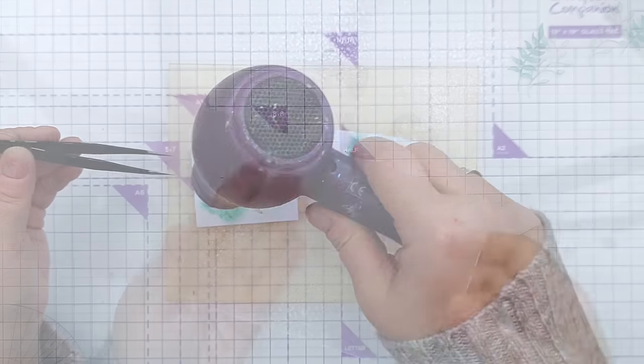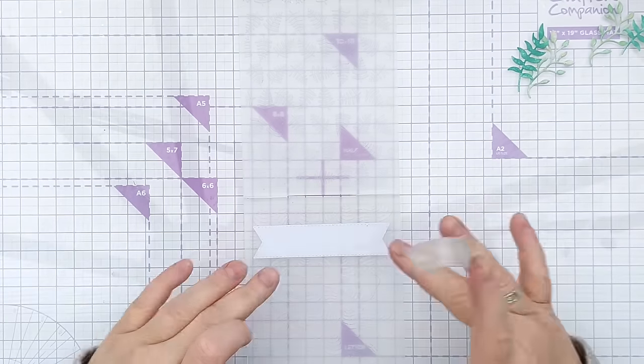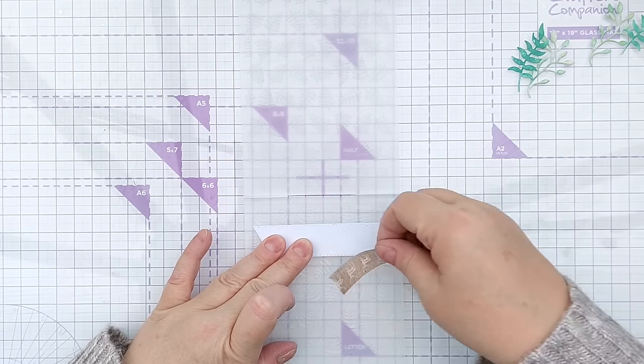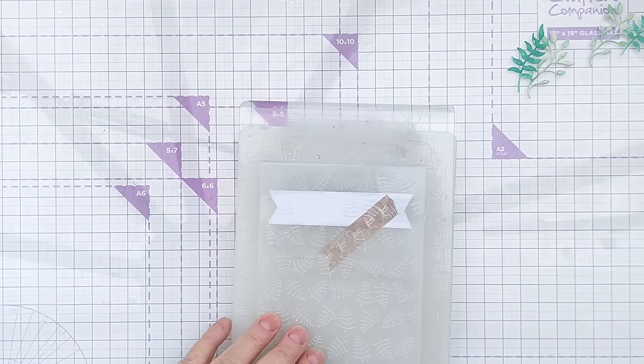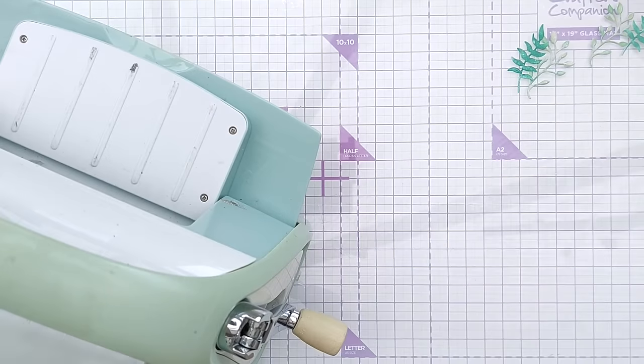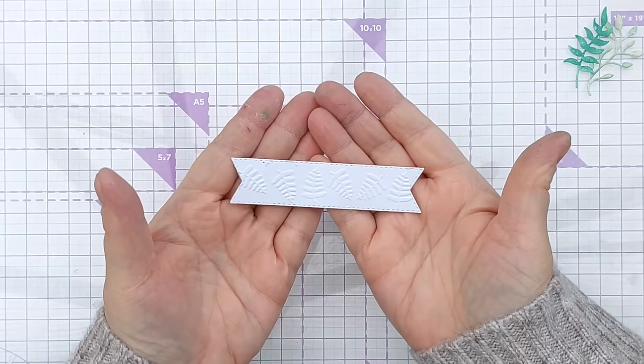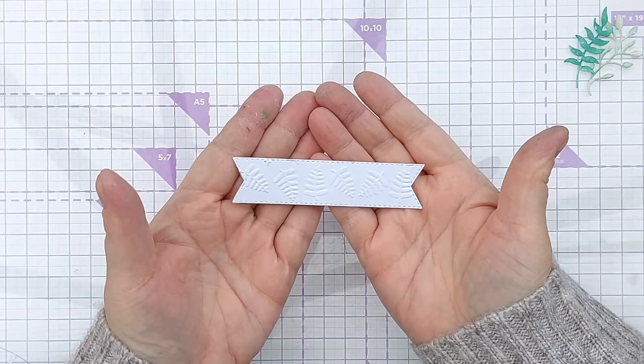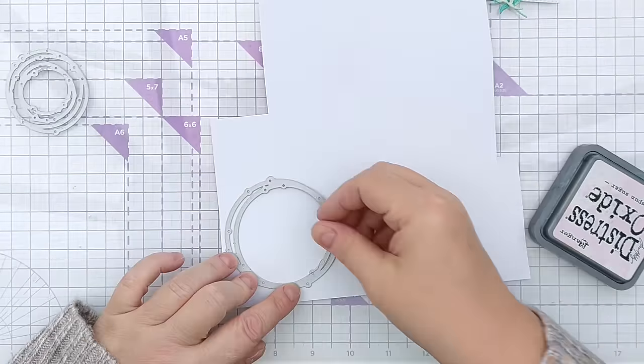Off camera I die cut out my stitched fishtail banner from smooth white card and then I put it in a fern design embossing folder and ran that through my cuttlebug. I held the die cut down with some washi tape in the embossing folder so that I could get the pattern exactly how I wanted it.